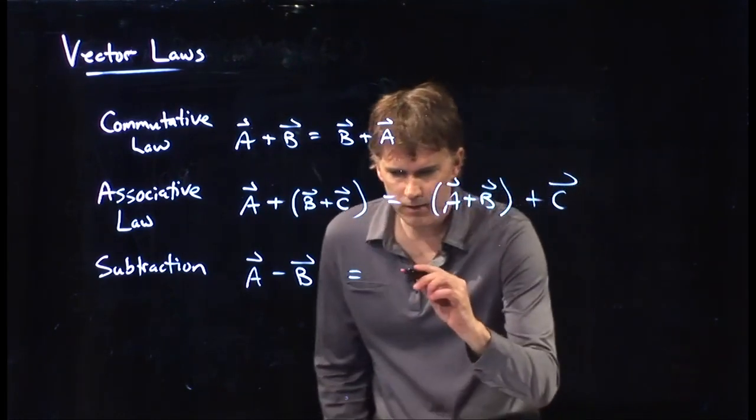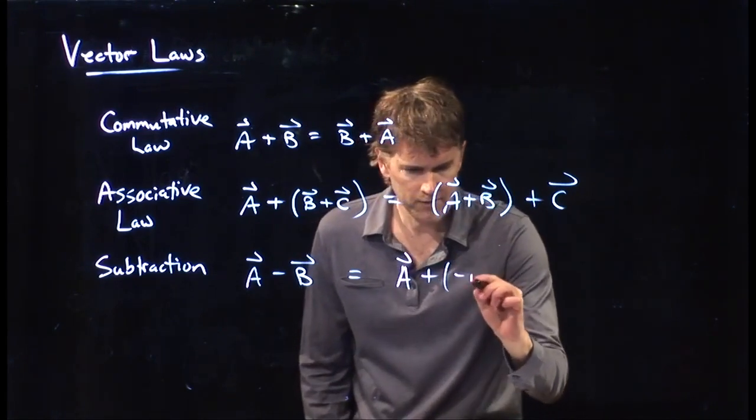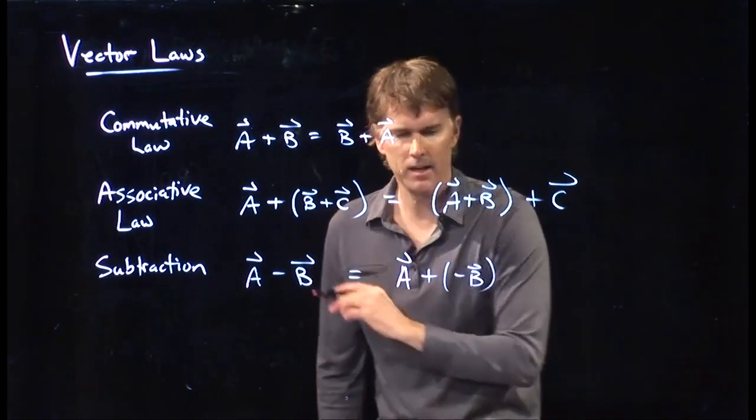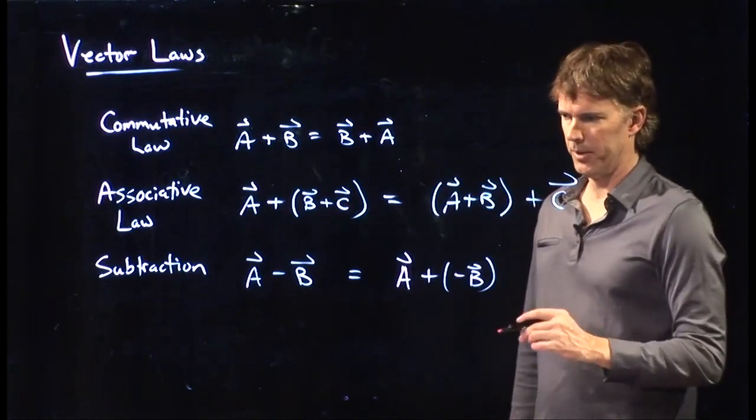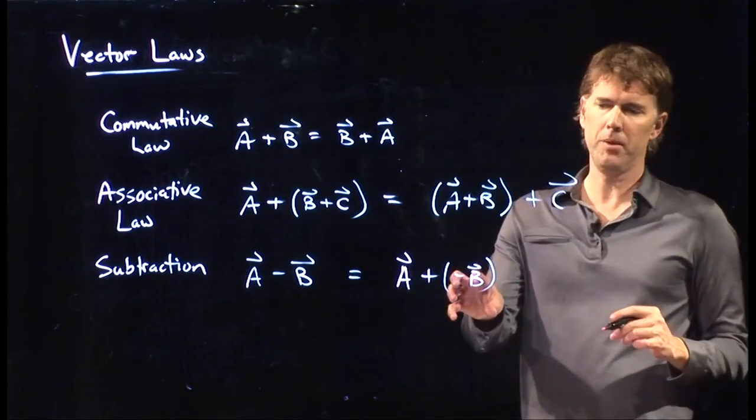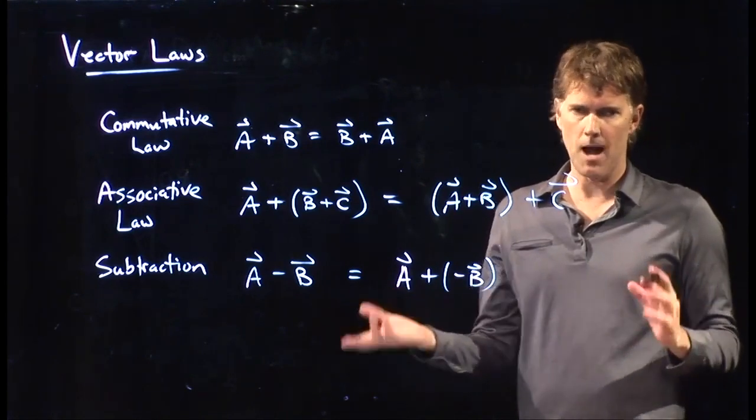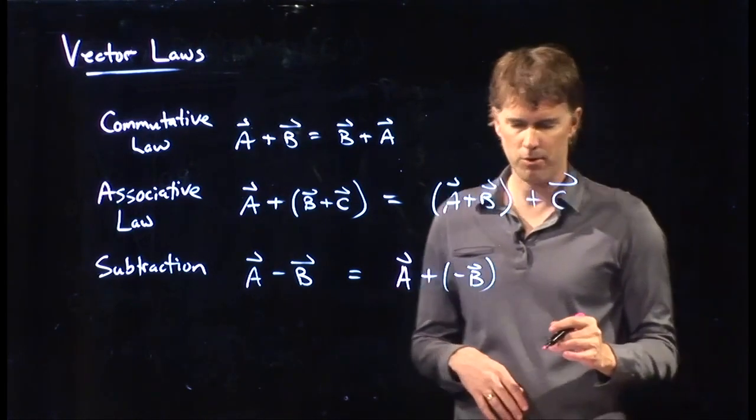The way you do it is you're still just adding two vectors. It's just that the second vector you're going to add is the negative of B. The negative of B is exact same length, opposite direction of your original B.